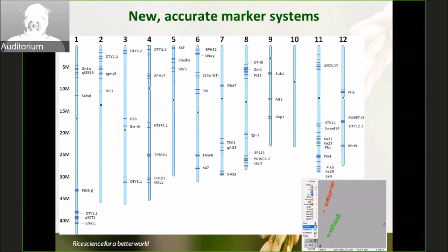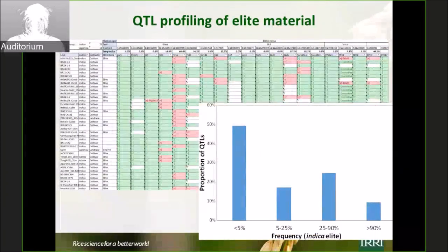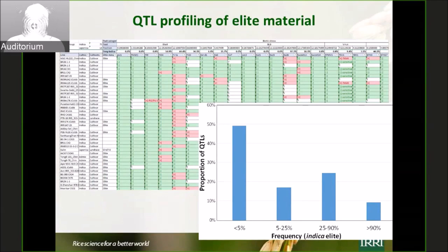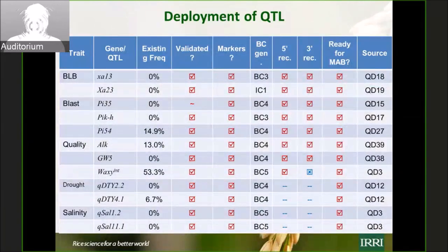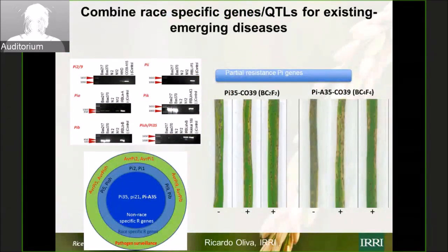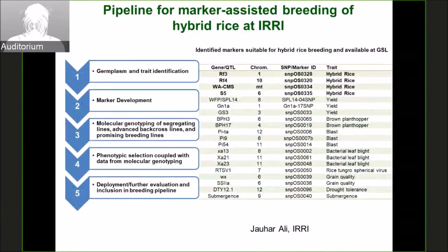We also found that most breeding lines in cultivation have a very low frequency of important alleles. So we have taken on the task of increasing the allele frequency of important genes into ELITE lines. The trait integration group deploys all QTLs and genes into ELITE breeding lines, whether for abiotic or biotic stress, and then it goes to the varietal development or hybrid rice program. Hybrid rice is also moving in the same way — using different genes and QTLs, and taking a forward breeding approach.